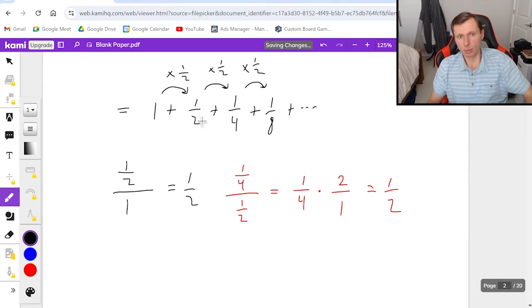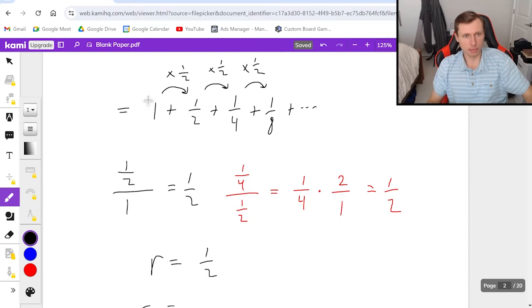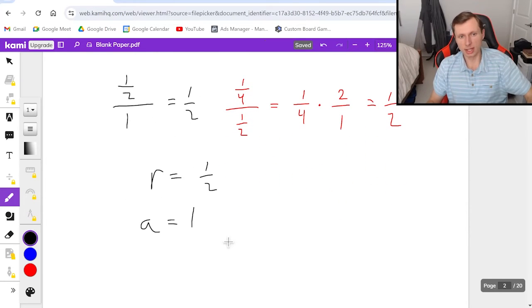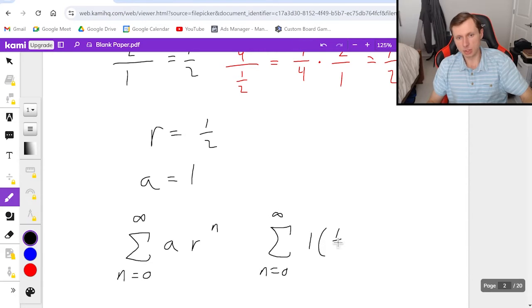Regardless, we're multiplying by one half each time. That makes r the one half value. That's where r comes from. And a is just the first term. So in this case, it's one. And I don't even need a series to prove that. But now if I want to turn this into a series, I can write series from n equals zero to infinity of a times r to the n. So in other words, n equals zero to infinity of one times one half to the n. And there we go.